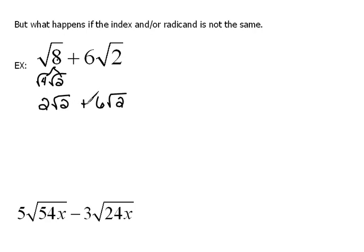Now, this we can add together because they do have the same radicand and the same index. So 2 of those plus 6 of those would be 8 of those square roots of 2.